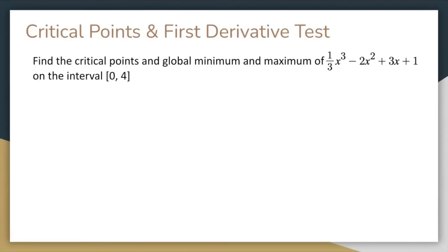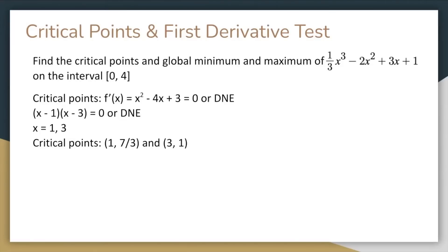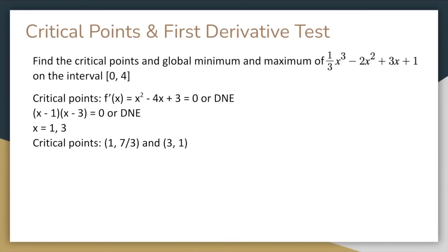All right, for the first derivative test, you have to find the critical points of f of x by solving for where f prime of x equals 0 or does not exist. In this example, if we differentiate and set the result equal to 0, we get the critical points of 1 comma 7 over 3 and 3 comma 1, and there are no points where f prime of x does not exist. Define the global min and max on a closed interval, you must test all the critical points and end points. In this case, you see that the lowest y value out of all of these points is 1, and the highest is 7 over 3, so those are the global min and max respectively.